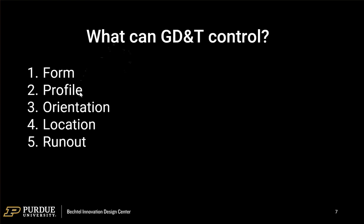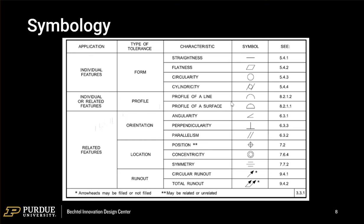GD&T can control form, profile, orientation, location, and runout. Runout is unique to cylindrical surfaces, while the rest can apply to all kinds of shapes. There are symbols for specific geometric call-outs — the names of very specific geometric forms as subsets. In form, we can control how straight, flat, circular, or cylindrical something is.